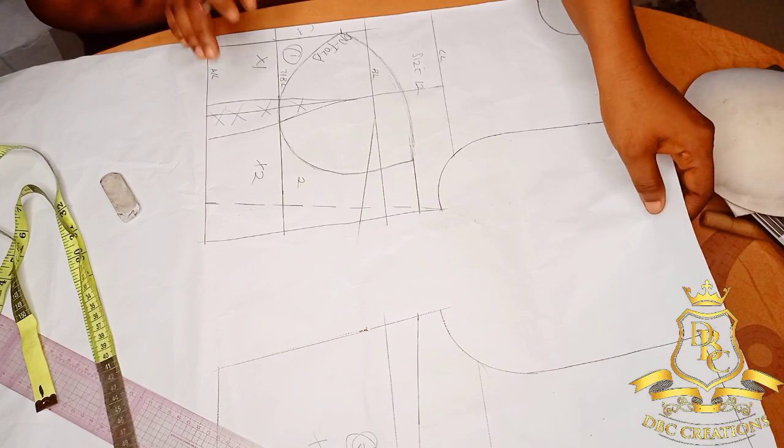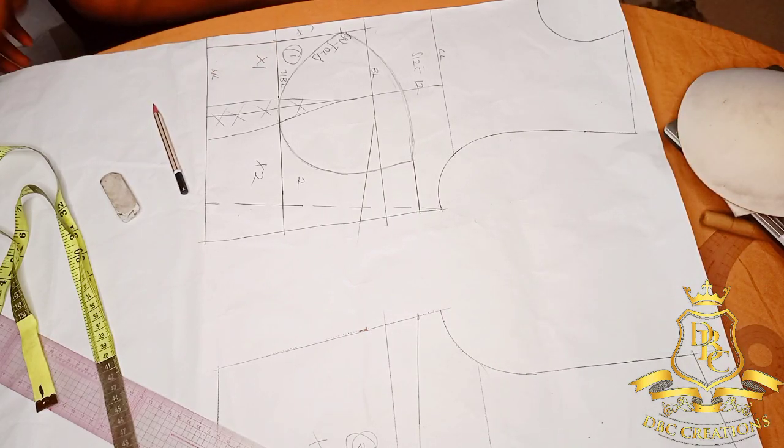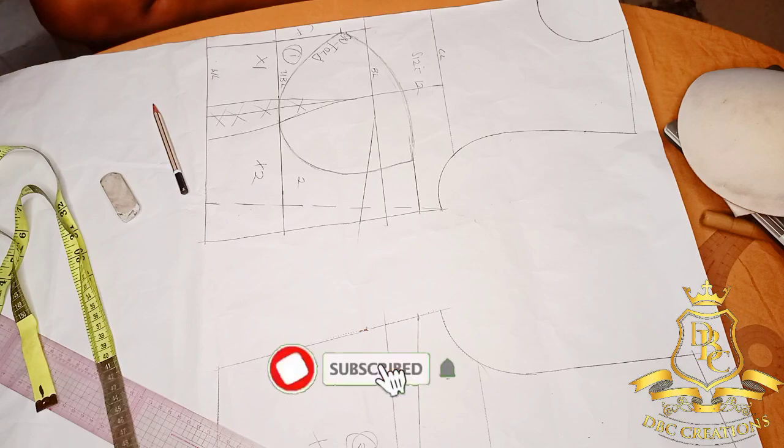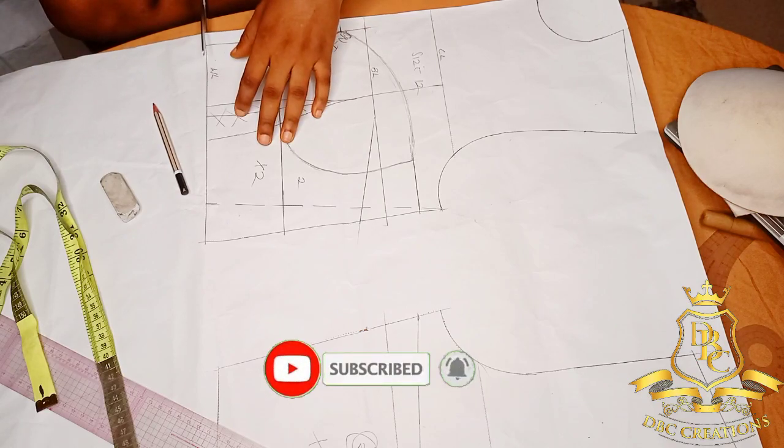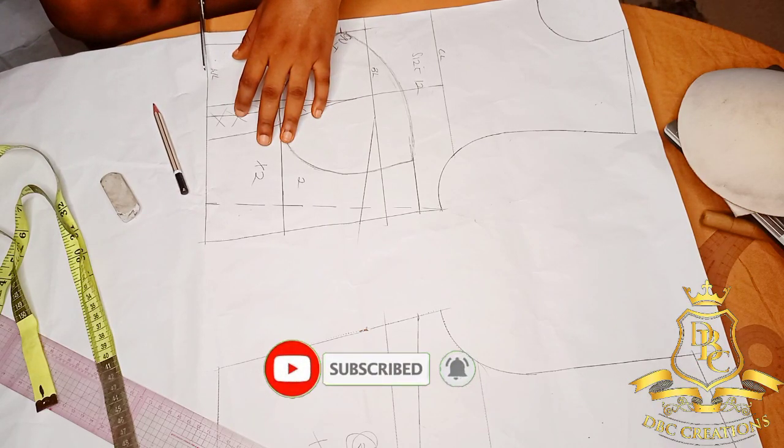So I'm going to cut out, I'm going to cut it out now, then add my necessary seam allowances to it.